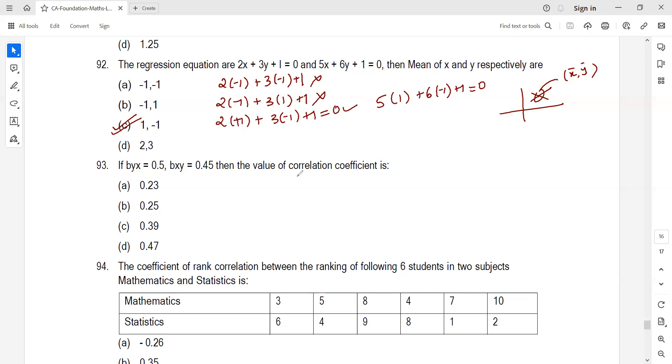Question 93: bYX is given, bXY is given, find correlation coefficient. Straightforward formula: R square equals bYX into bXY. Just put the values and solve. You'll get answer D.